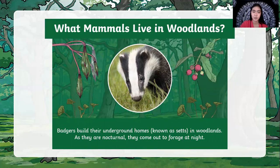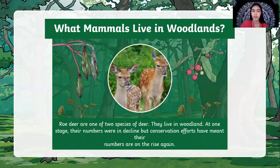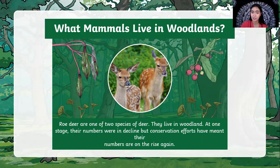What mammals live in the woodlands? Badgers build their underground homes in the woodland. They are nocturnal — they come out to forage at night. Nocturnal animals are awake at night, while diurnal animals are awake during the day. Roe deer are one of the two species of deer that live in woodlands. Their numbers were once in decline, but conservation efforts have meant their numbers are on the rise again.